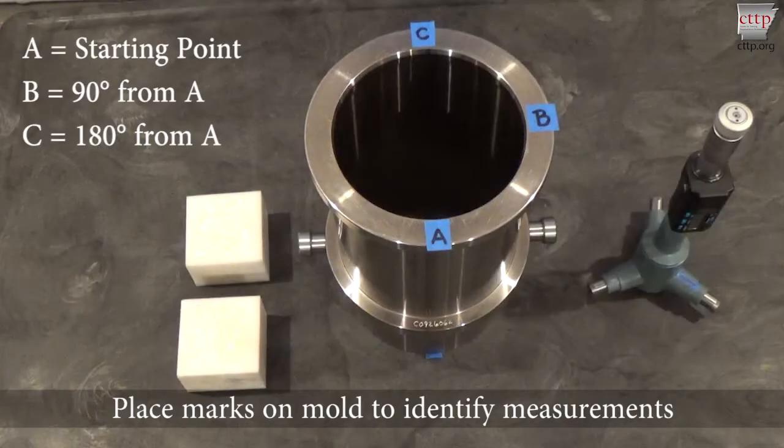Place marks on both the upper and lower rims of the mold to identify the measurement locations A, B, C. A is the starting point and may be at any point on the rim. B will be 90 degrees from A and C will be 180 degrees from A. Mark corresponding points on the other end of the mold.